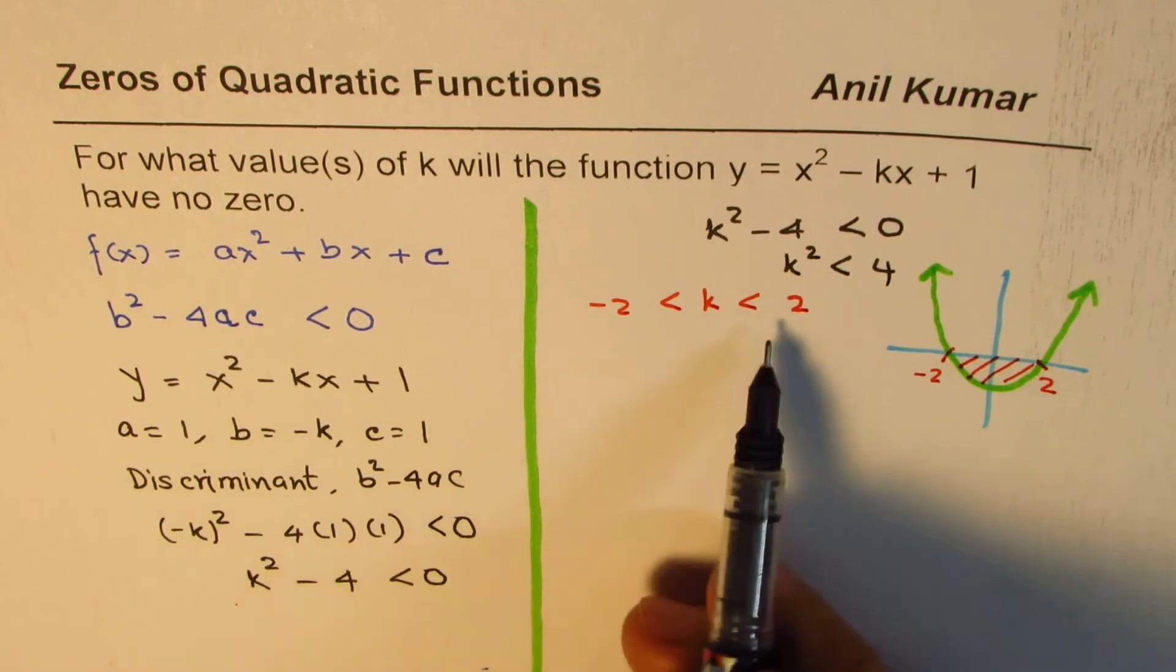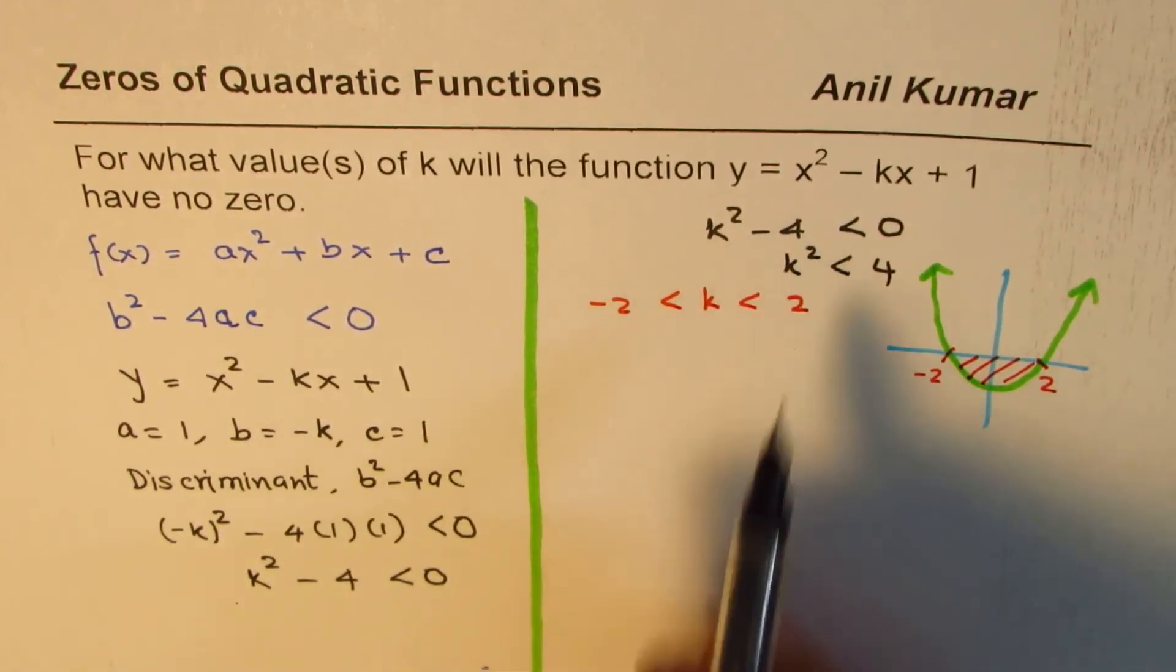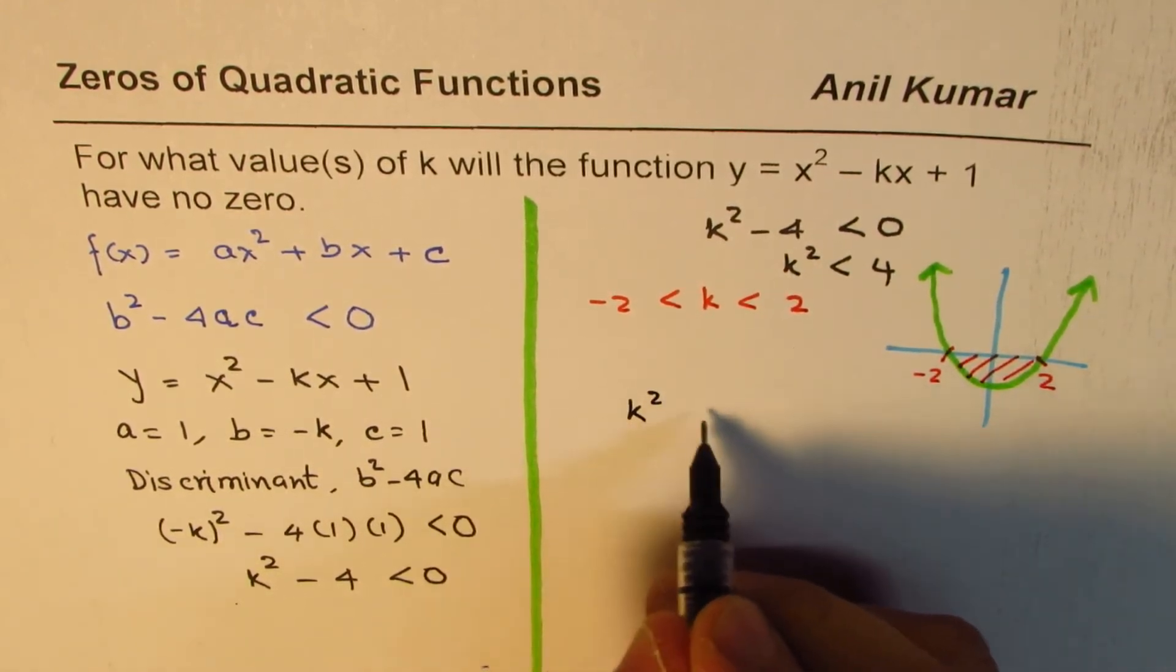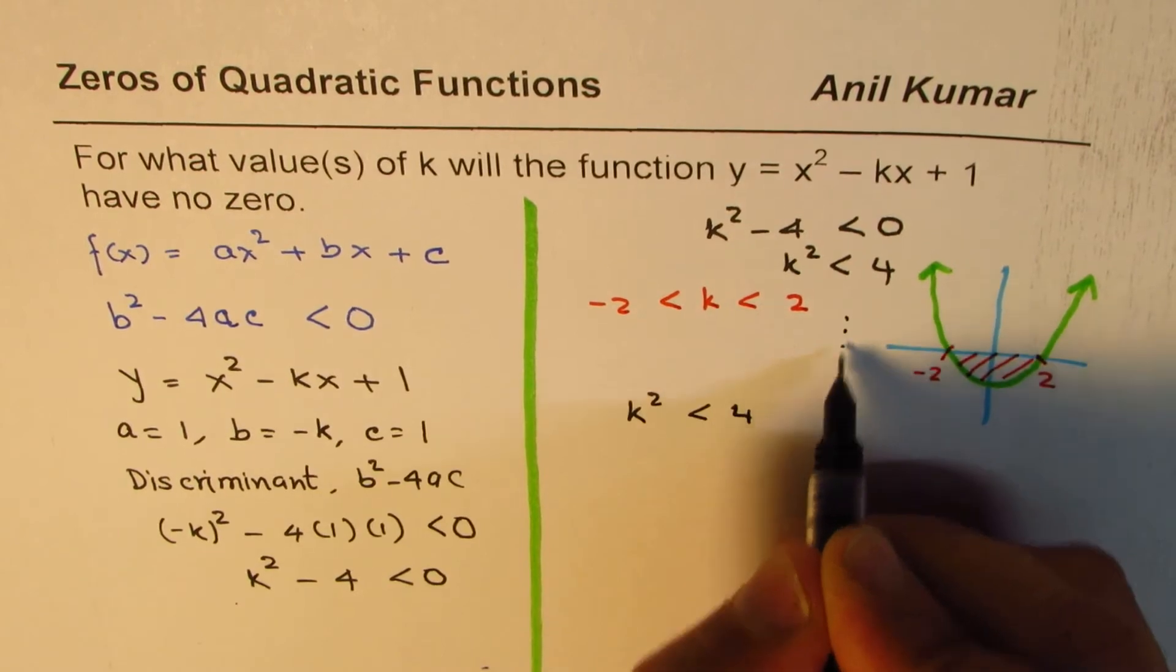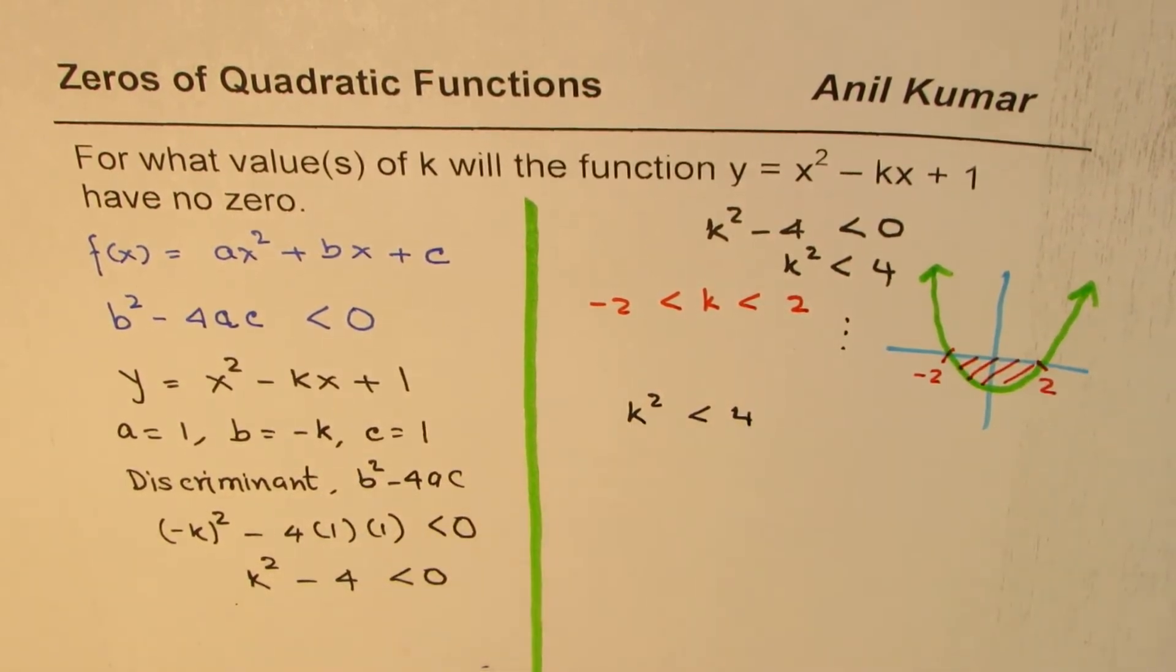Now how do you get this solution algebraically? Let's get back to this equation once again. So I'm now again writing this k² < 4, and let's continue from here. Now if we do square root, then what do we get?